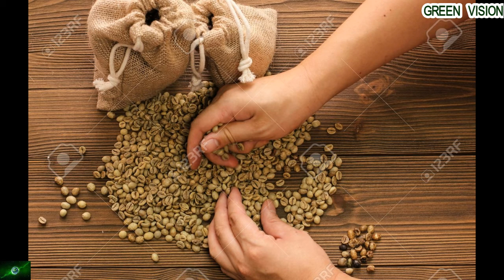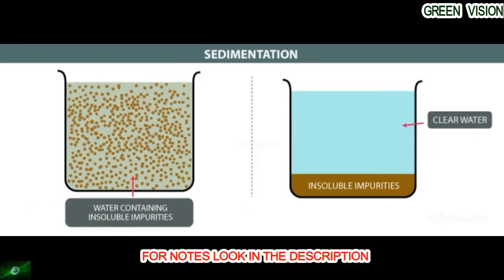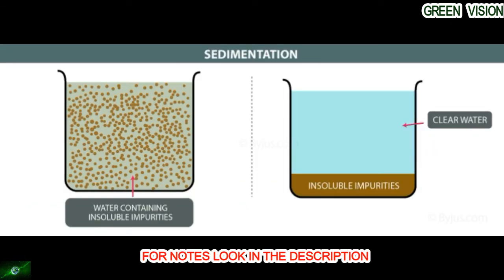Hand picking: if the stones are visibly very different from the grains, they can be easily picked and separated by hand. This is called hand picking. Substances that are attracted to a magnet are called magnetic. Separating solids using a magnet is called magnetic separation.